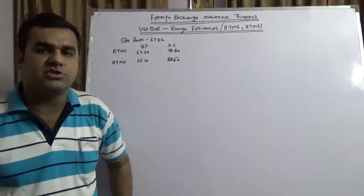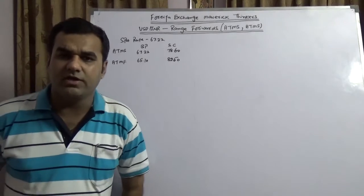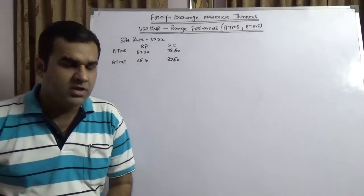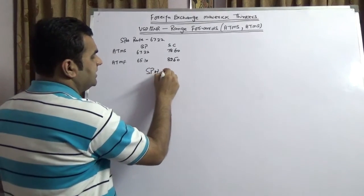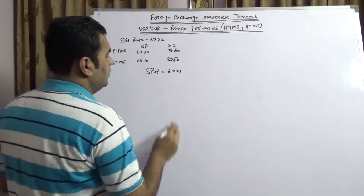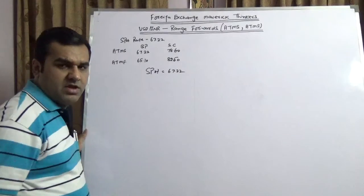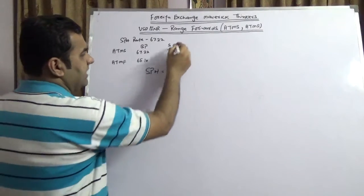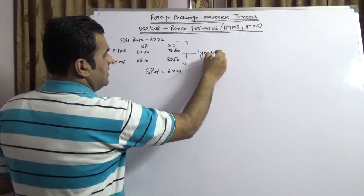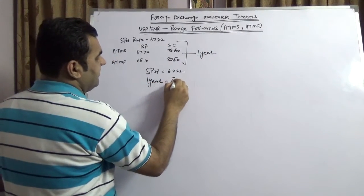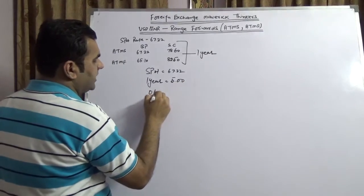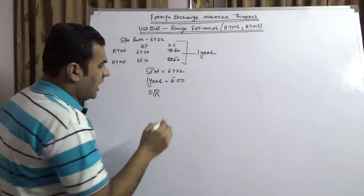Before initiating the video, I would like to take you to a small demonstration of what do you mean by at-the-money spot and what do you mean by at-the-money forward. Take a very small example. Suppose the spot price is moving 67.22, and we are taking an example of one year. Suppose the one year premium is trading at five rupees.